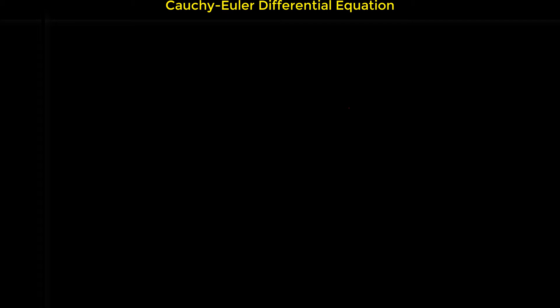In this video I'm going to show you how we can solve Cauchy-Euler differential equations of the third order or higher orders. Let us start with a third order differential equation: x³y''' + 2x²y'' + xy' - y = 0.